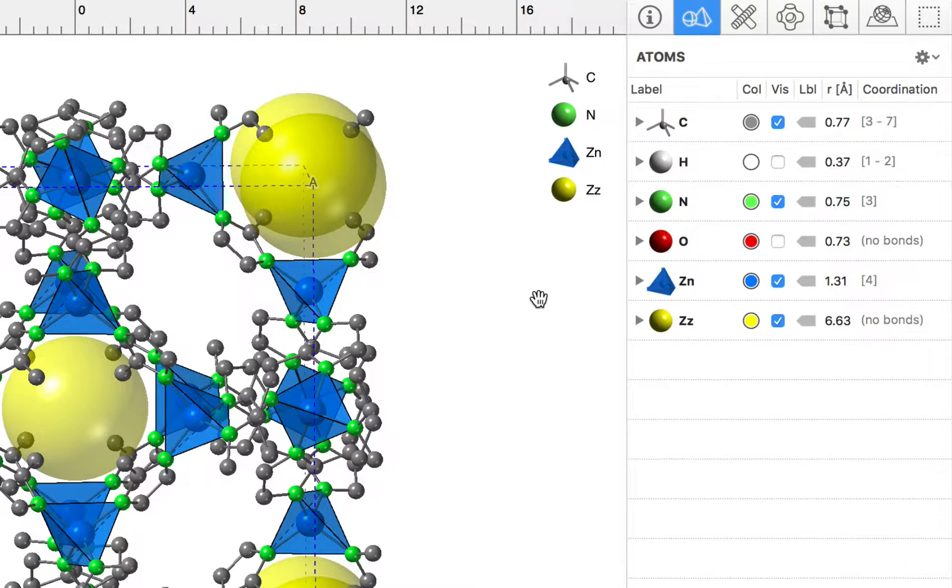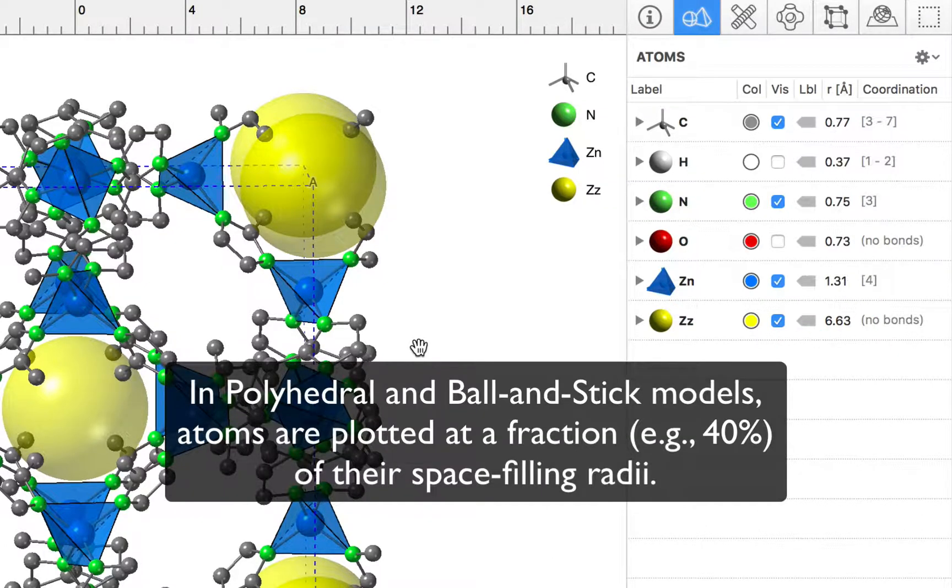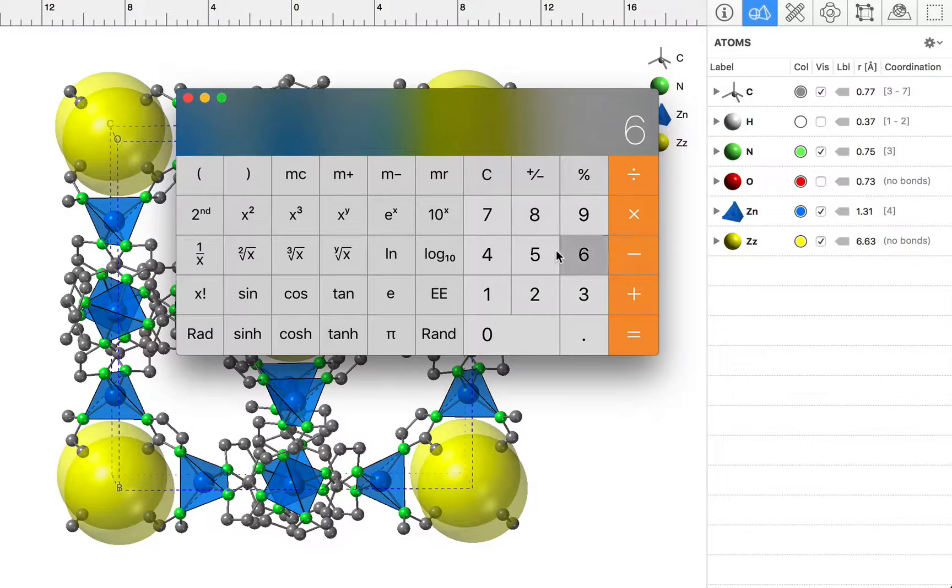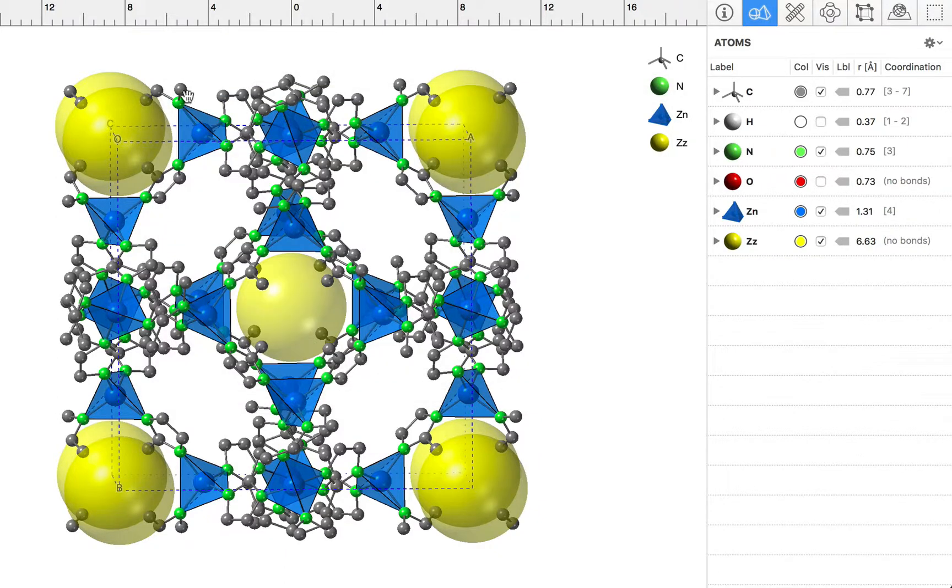Our dummy sphere is 6.63 angstroms in radius. To make that appear the correct size for a polyhedral model, we need to divide that by 0.4, so 6.63 divided by 0.4 equals 16.58 angstroms. We'll just edit that radius.